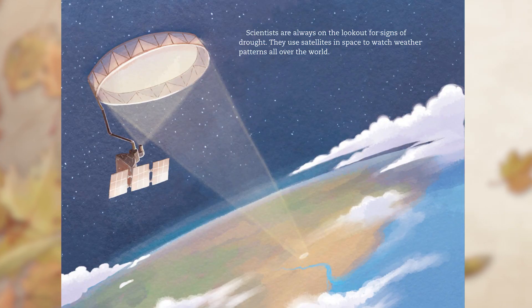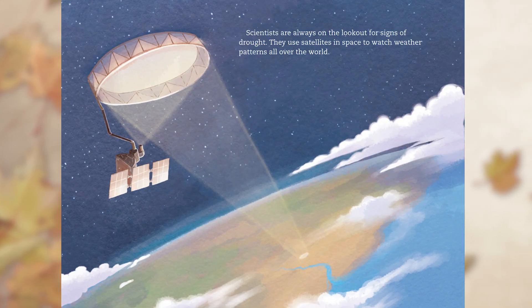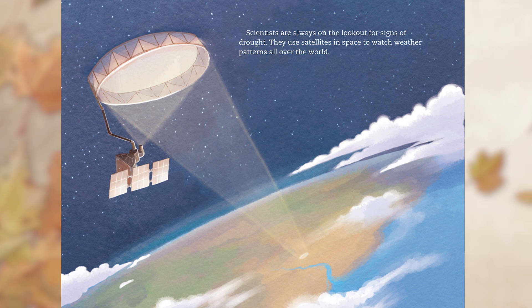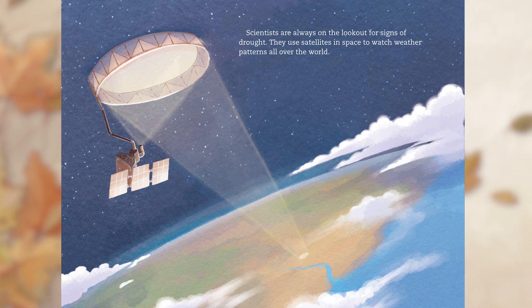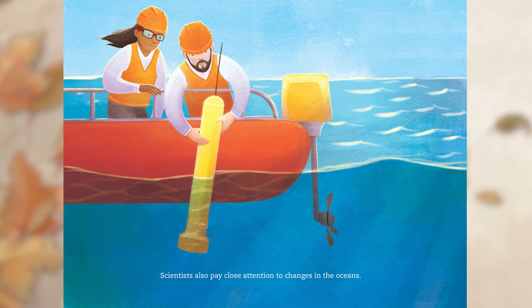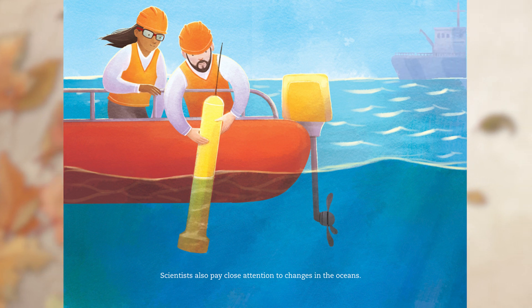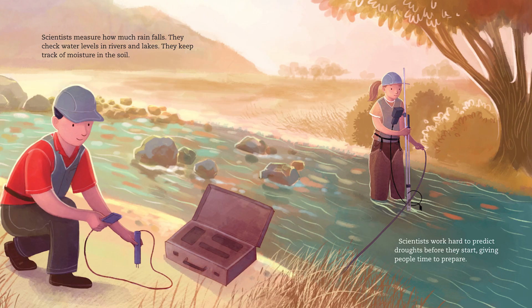Scientists are always on the lookout for signs of drought. They use satellites in space to watch weather patterns all over the world. Scientists also pay close attention to changes in the oceans. They measure how much rain falls, check water levels in rivers and lakes, and keep track of moisture in the soil. Scientists work hard to predict droughts before they start, giving people time to prepare.